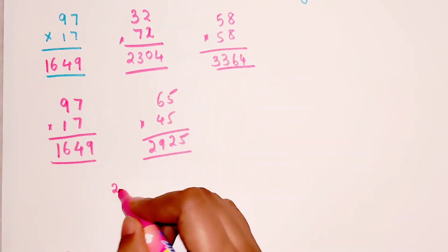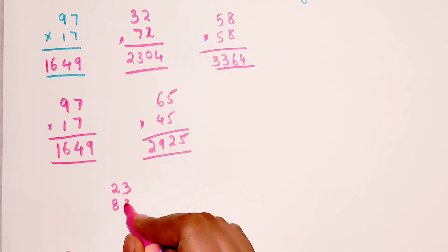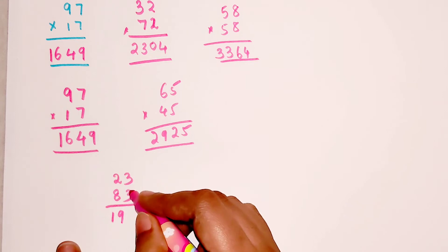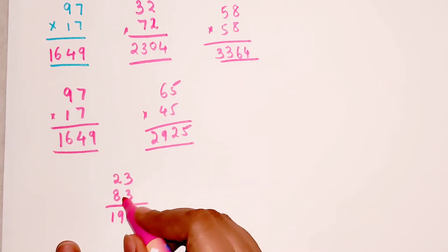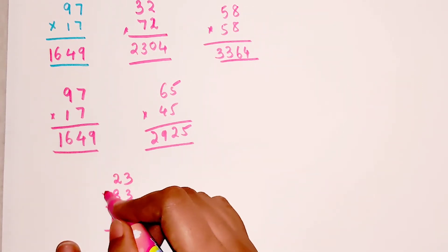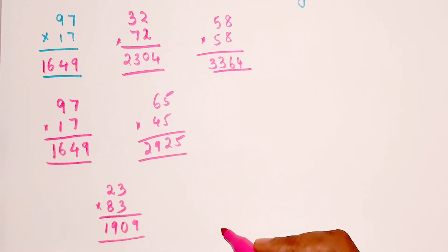Let's do 23 and 83. So we get 2 into 8 is 16, 16 plus 3 gets you 19, and the square of 3 is 9. But since this is 2 digit into 2 digit we write down in the form of 2 digit only, so 1909 is your answer.